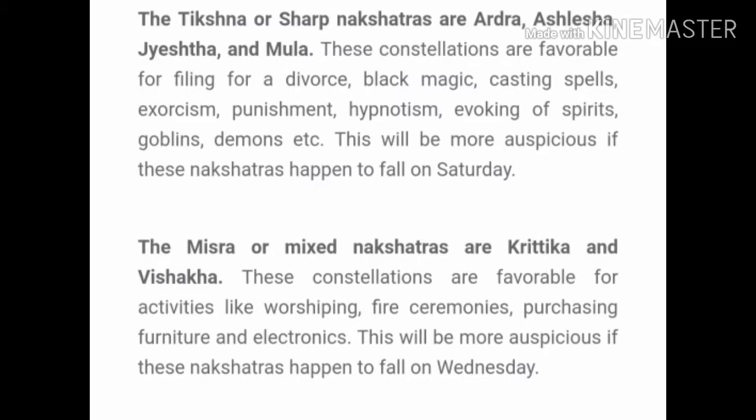There is a fourth category called Tikshna or Sharp Nakshatras. These are generally not favorable Nakshatras. Jesta represents the eldest person, Mula represents the root of your family, and Aslesha represents a snake. These Nakshatras are favorable if you are filing for a divorce or evoking spirits, goblins, demons, etc. These Nakshatras are generally associated with Mercury, Rahu and Ketu. If these activities are done when these Nakshatras fall on a Saturday, it is considered auspicious.